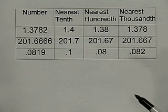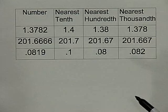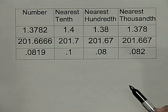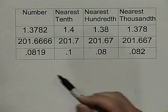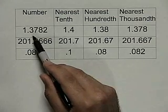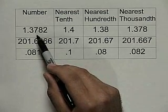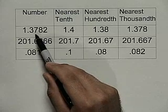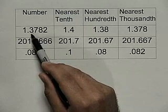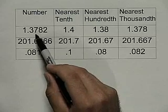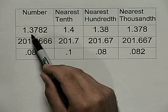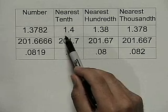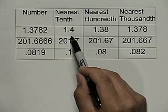The first number we're given is 1.3782, and we're first asked to round to the nearest tenth. In order to do this, we locate the tenths position, which is where the 3 is. Then we look at the number to the right of that. If that number is 5 or greater, we round the 3 up to a 4; if it's less than 5, we keep the 3. Since there's a 7 to the right, which is greater than 5, we round the 3 up to a 4. So this number is 1.4 when rounded to the nearest tenth.